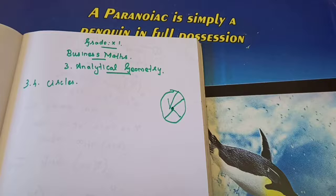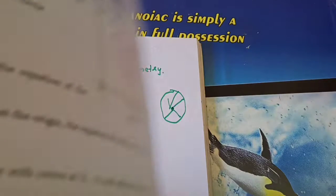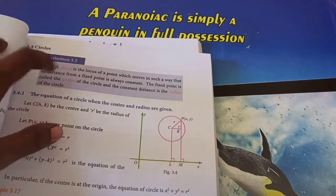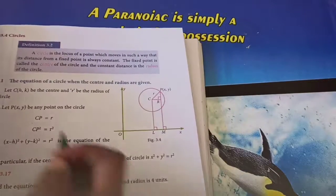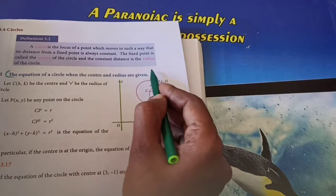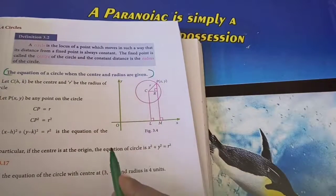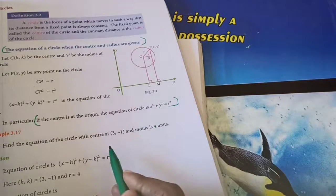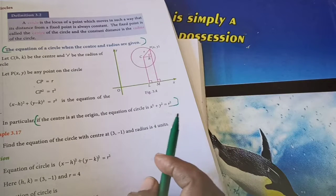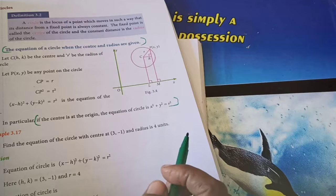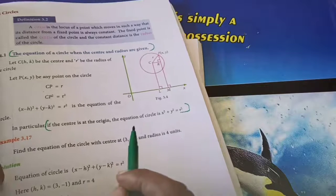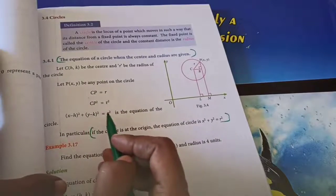No need to take down the definition in your notes — just read it from your book. Put the heading: equation of a circle when the center and the radius is given. Write down this. If the center is at the origin, the equation of the circle is one formula; we will use it there.